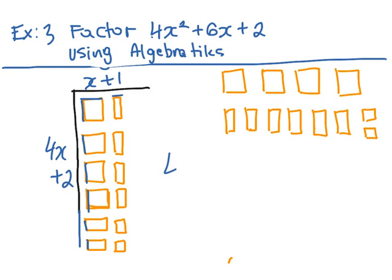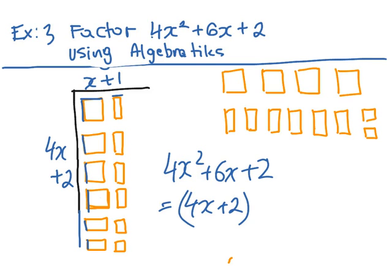Therefore, our answer to the factor of 4x squared plus 6x plus 2 is equivalent to 4x plus 2 times x plus 1. That's our factor. Because these are the dimensions of the area of this shape. And here is your...